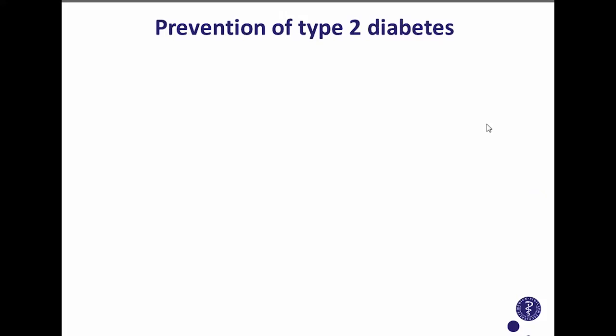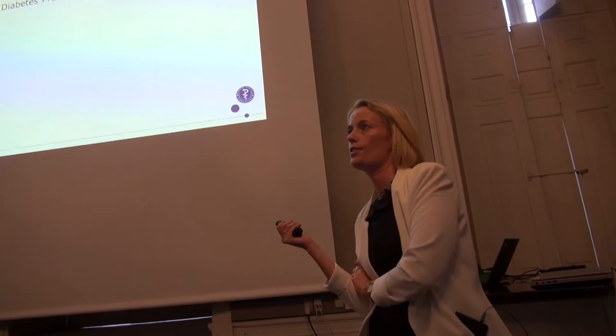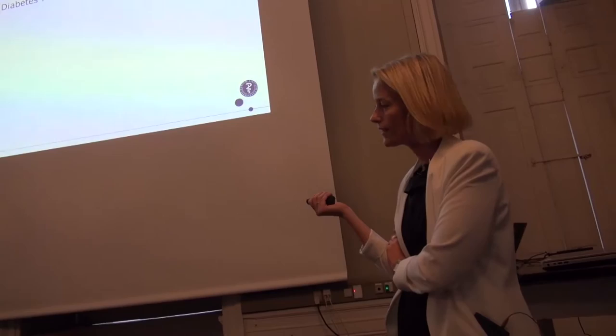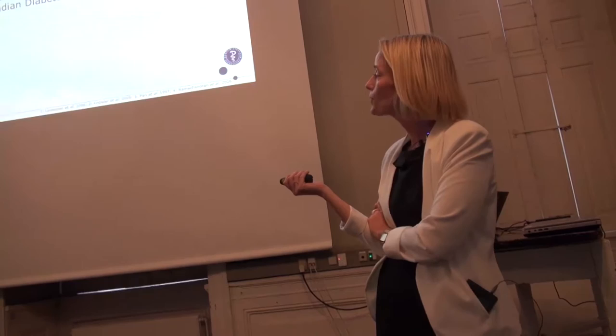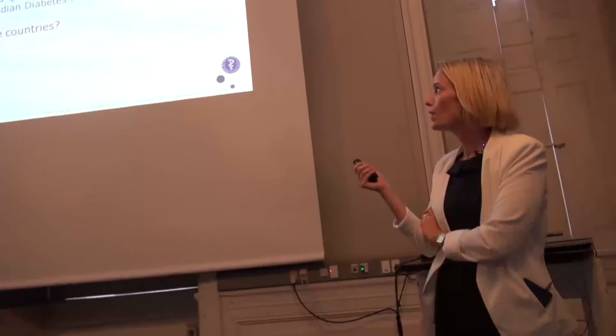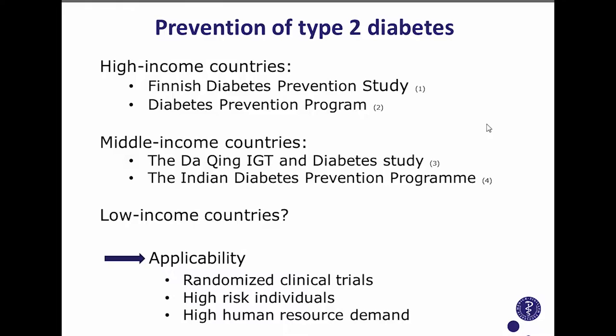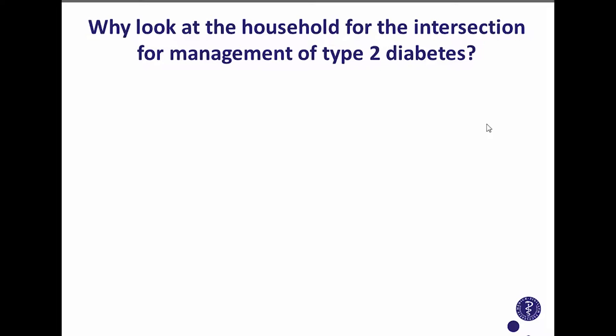Type 2 diabetes can be prevented. It has been shown in high-income countries that interventions targeting weight loss through a healthy diet and increased physical activity can prevent type 2 diabetes. Studies have also been conducted in middle-income countries, but no studies have been conducted in low-income countries, so we don't know how applicable this is to Uganda. Also, all these interventions had high resource demands, and Uganda's health system is already overwhelmed with infectious diseases.